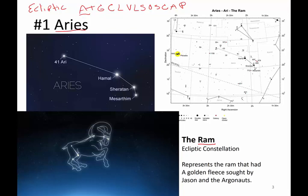Aries represents the Ram. If you remember some mythology, Jason and the Argonauts went on a quest to find the golden fleece — the golden fleece of this Ram. The Ram constellation looks in the sky just like a collection of small, kind of a curved line; it doesn't look like a ram to me. Here are the stars that make up the Aries constellation, and Aries is right next to Taurus, which contains the Pleiades.